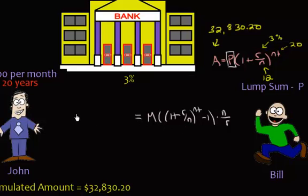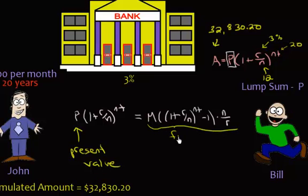Now Bill's going to come in. He wants to drop down one lump sum. He wants it to sit there for however many years, the same as what John's going to let it sit there for. And I want these to equal each other. So right here, this P here is the present value of an annuity. And this entire part here, this is the future value.